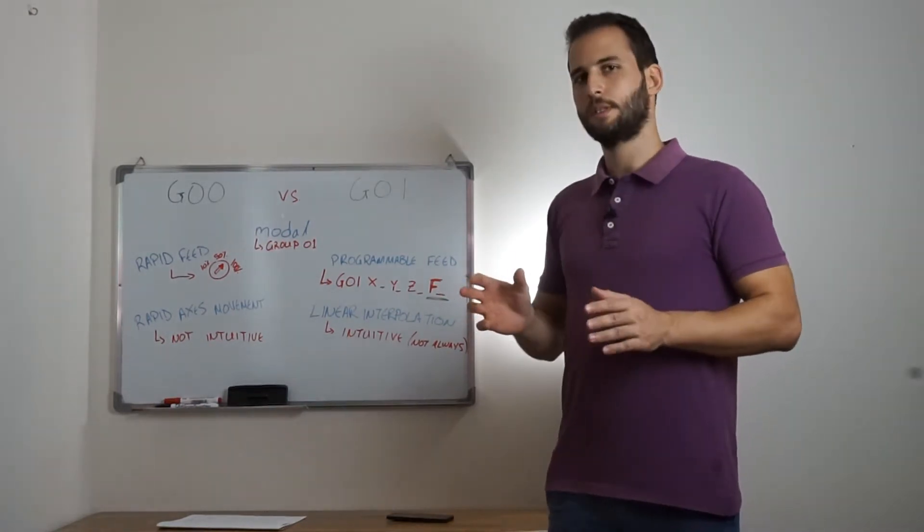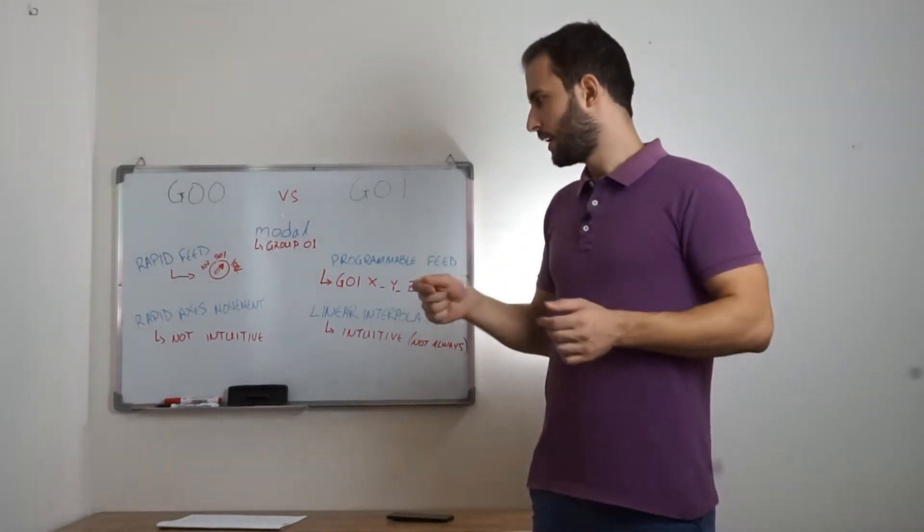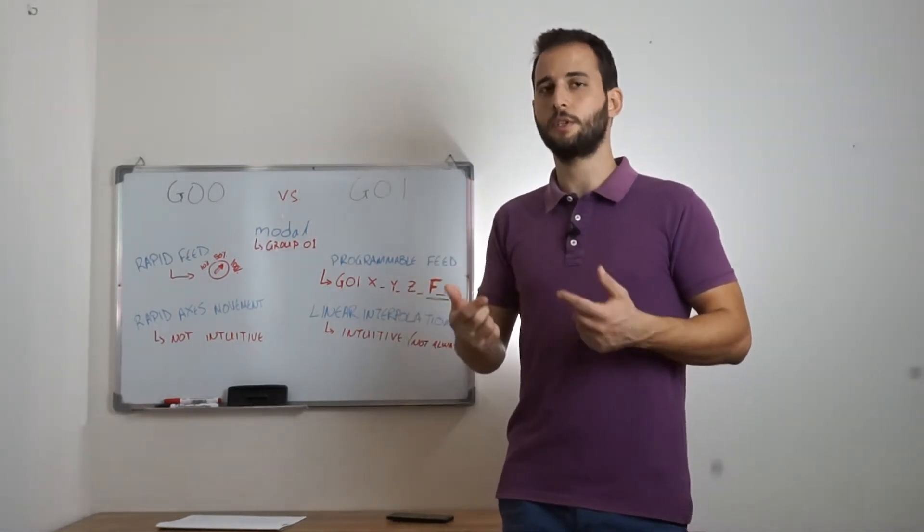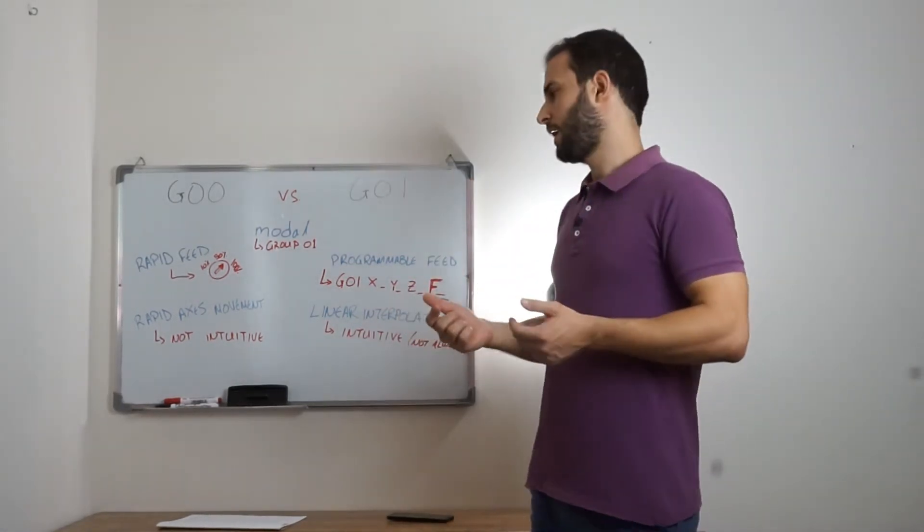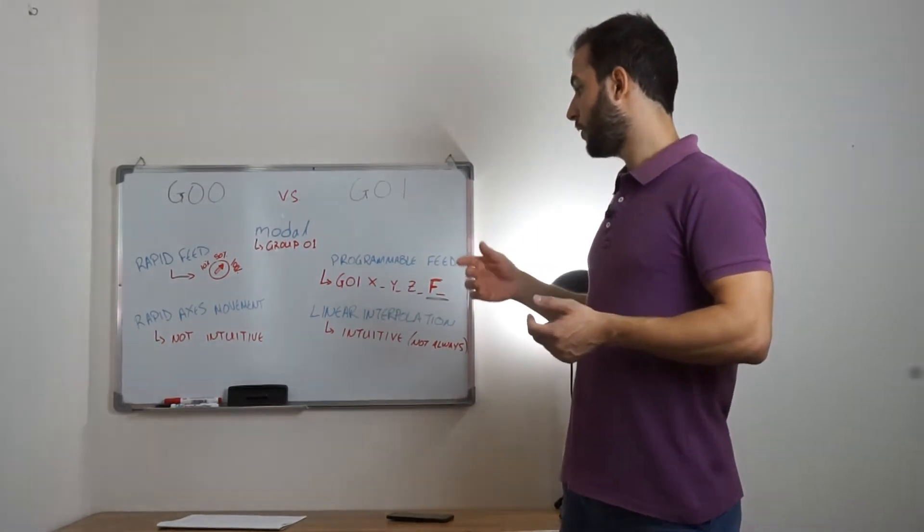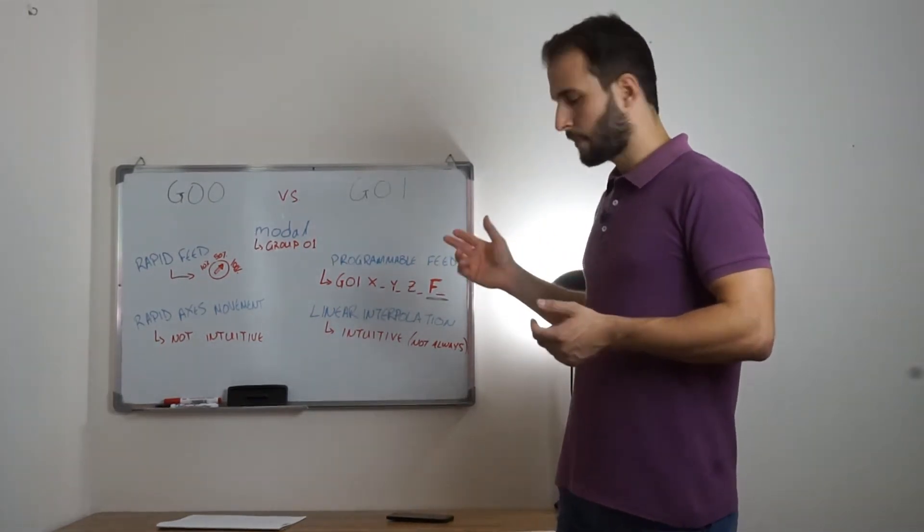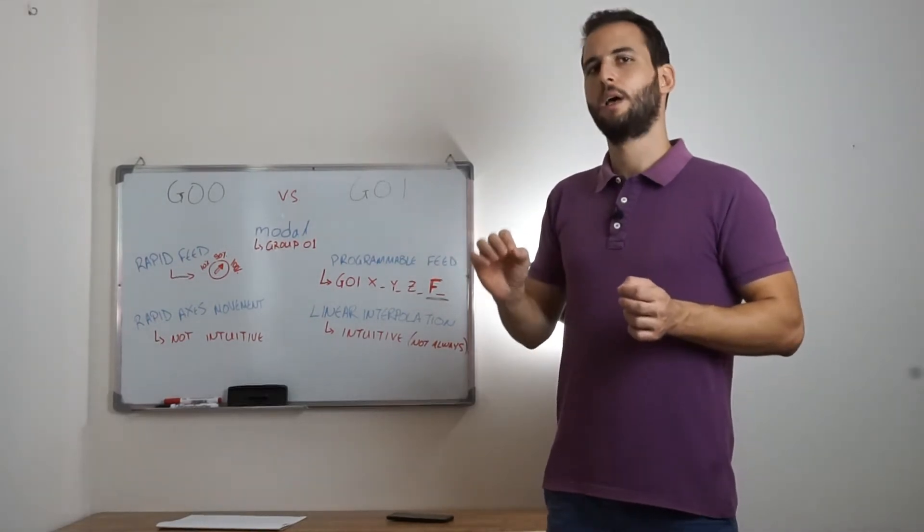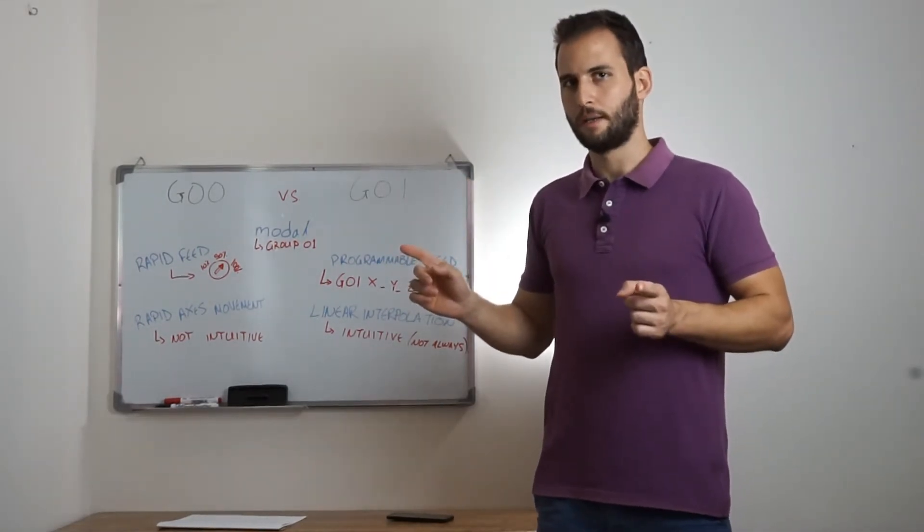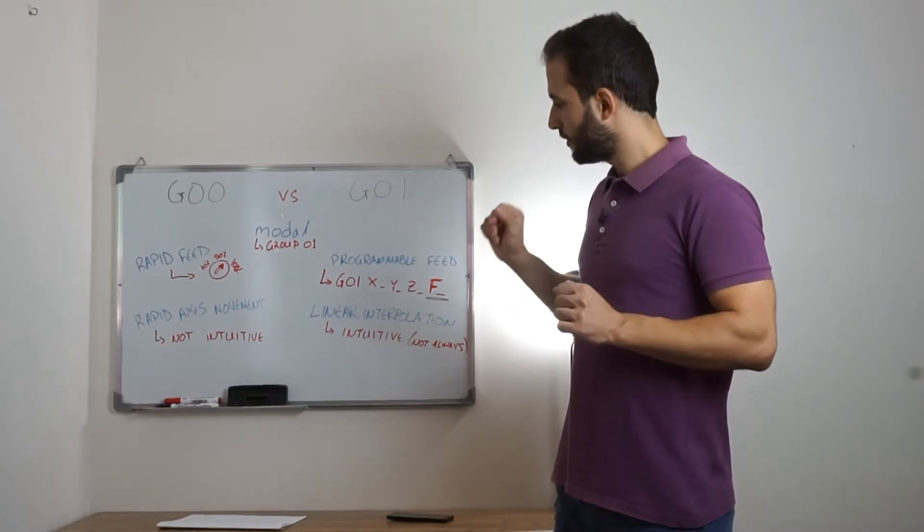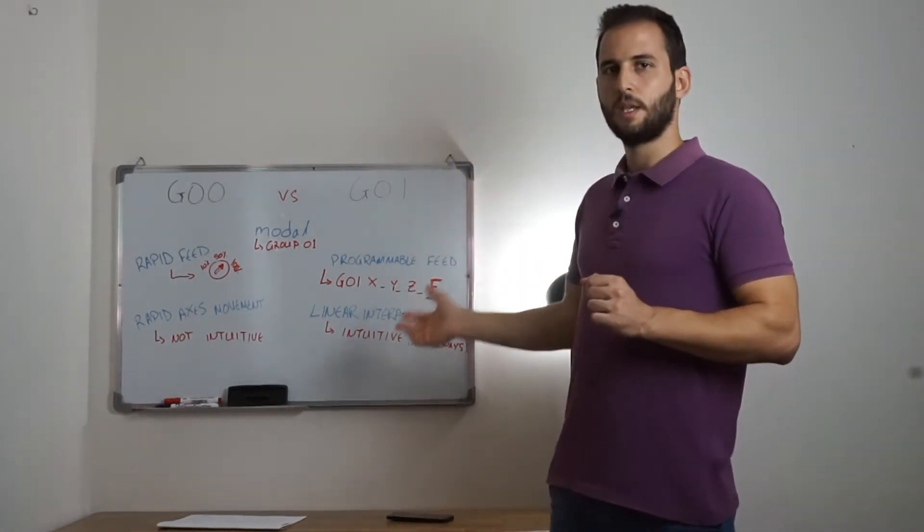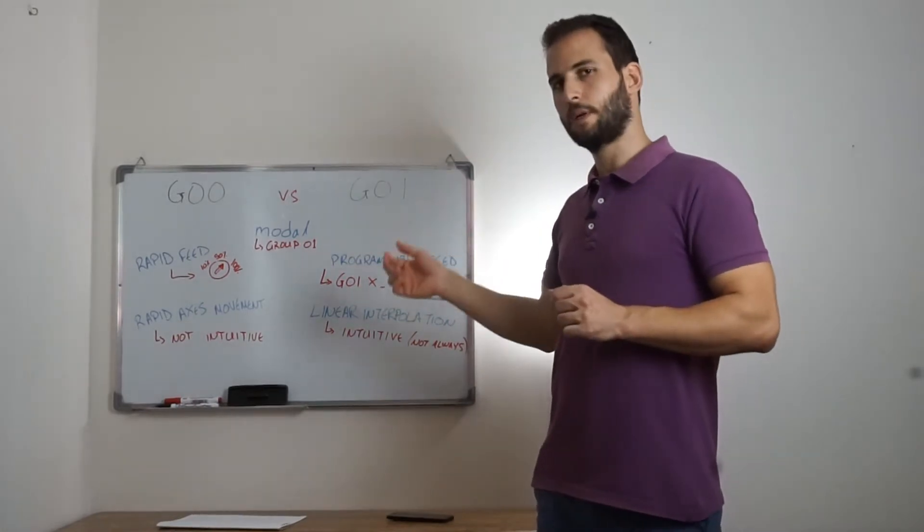This means that when we program G0, the resulted movement is not so intuitive. On the other hand, when we program G1, the resulted movement is usually a line. So, the result of programming G1 is more intuitive than when we program G0.